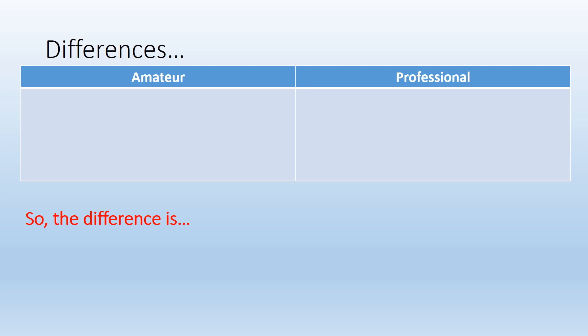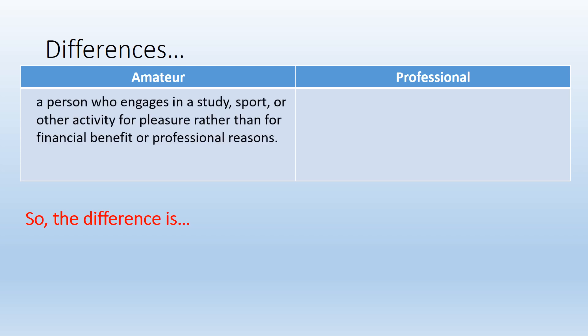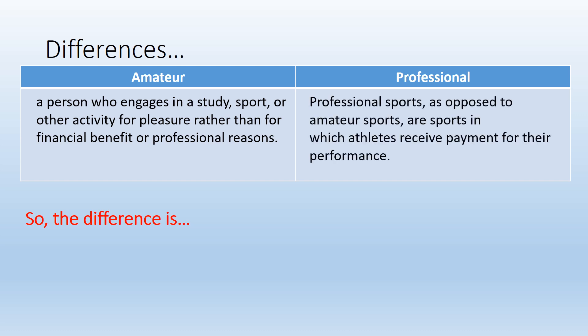So some differences between amateurs and professionals. An amateur is defined as someone who engages in something for pleasure rather than for financial or professional reasons. A professional is someone who does something because they receive payment for their performance. So anyone who teaches you are professional teachers — they teach because they enjoy it, but because that's what they do for financial payment.